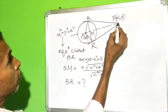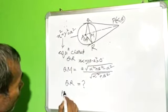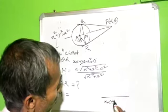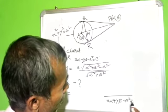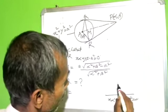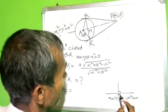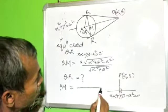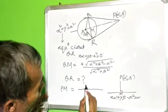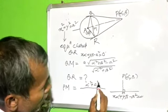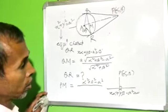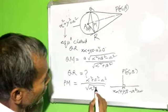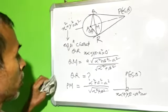Now, perpendicular distance PM. Using the line x·alpha plus y·beta minus a square equal to 0 and point P(alpha, beta), PM equals alpha square plus beta square minus a square, divided by root over alpha square plus beta square.